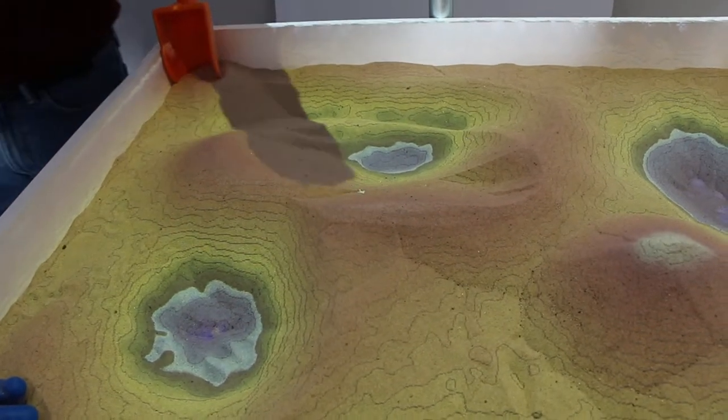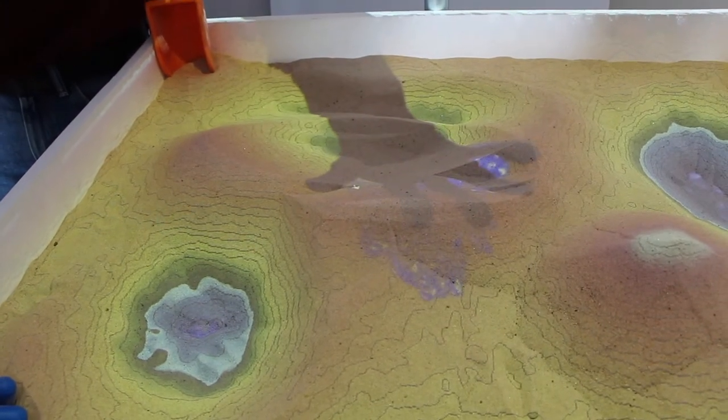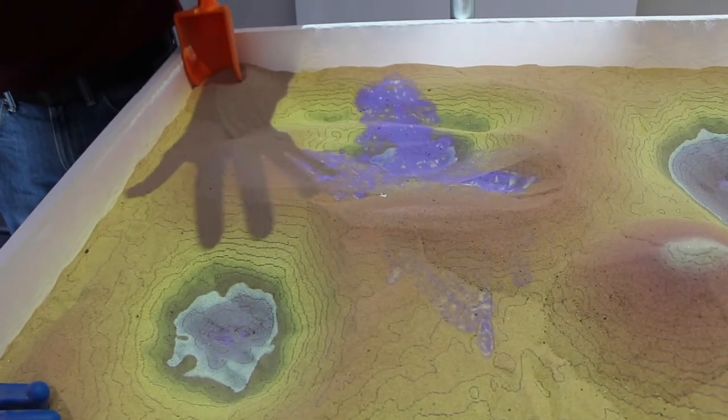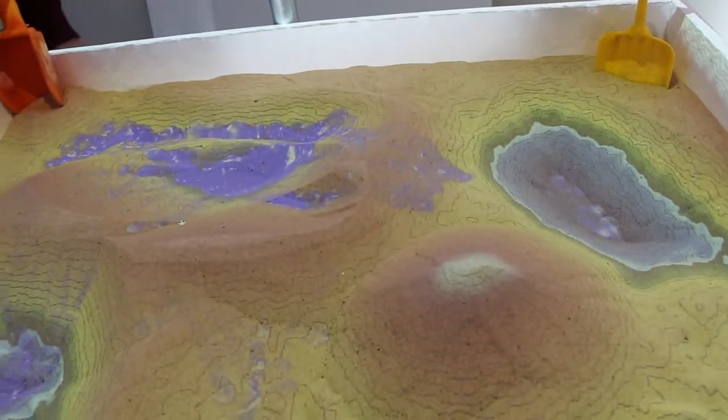It wants fingers. So it detects fingers to produce rain. Each finger is a cloud. Oh, I see. So I can make it rain and then watch the water flow. Your hand is the cloud there.